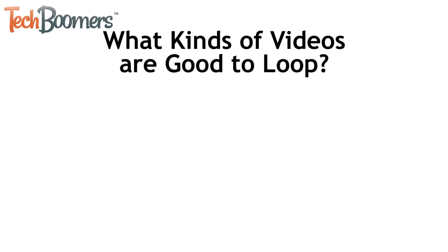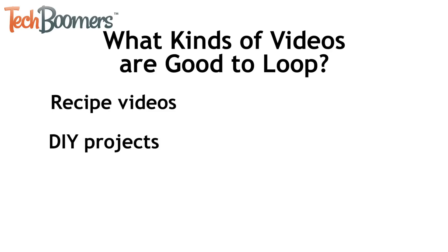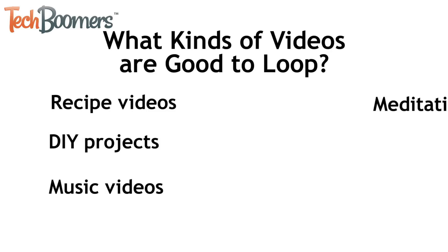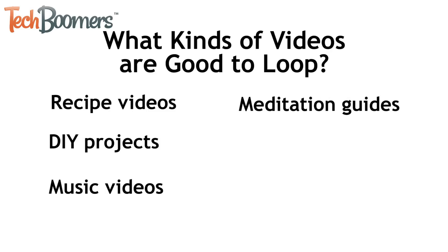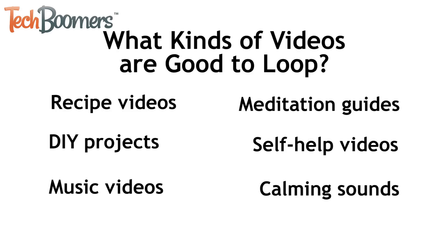First of all, what kinds of videos might you want to put on loop? Some types of videos you may want to loop could include tutorial videos like recipes or do-it-yourself projects, music videos, meditation guides or other self-help videos, and relaxation or calming noises to help you sleep, study, and relax.